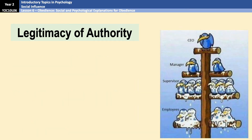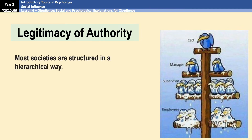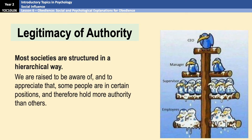The legitimacy of authority is an explanation for obedience that says we are more likely to obey people who we perceive to be above us in the social hierarchy. Notice the word 'perceive' — they don't have to necessarily be above us, but we have to feel like they are. Most societies and structures within those societies are laid out in a hierarchical way, with generally someone who is in charge, whether in businesses, families, schools, friendship groups, or just social situations. There is usually a pecking order of some kind.